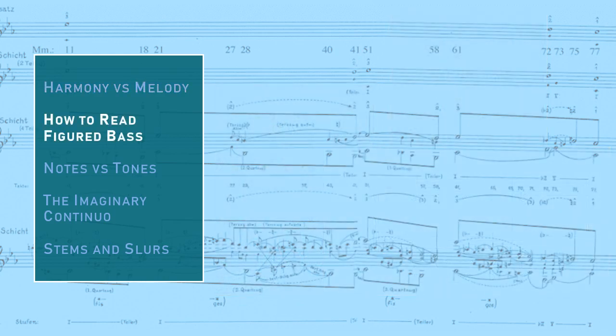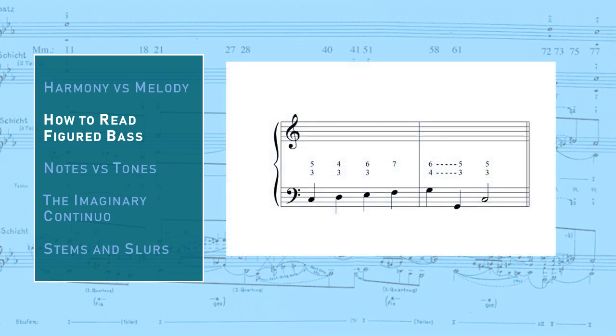The first step in understanding the melody-first approach to analysis, sometimes also referred to as linear analysis, is to rewind the clock to the 18th century and reset our perspective to think in terms of figured bass. Figured bass refers to the numbers written above a given bass line, as in this example. The figures refer to intervals above the bass that would be improvised by a continuo player, usually on a keyboard instrument.